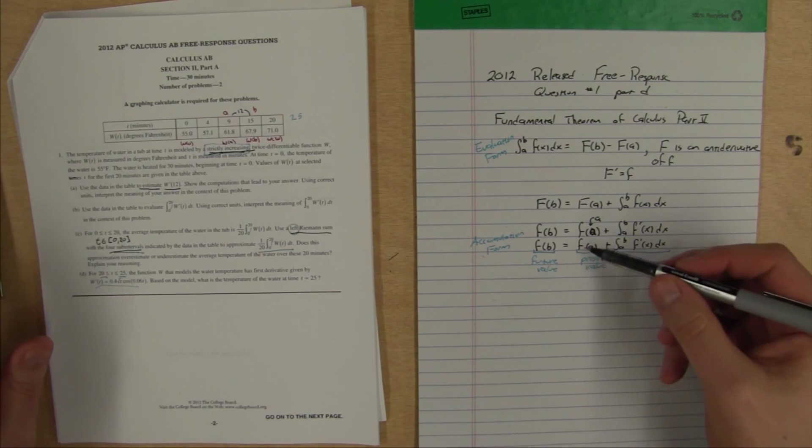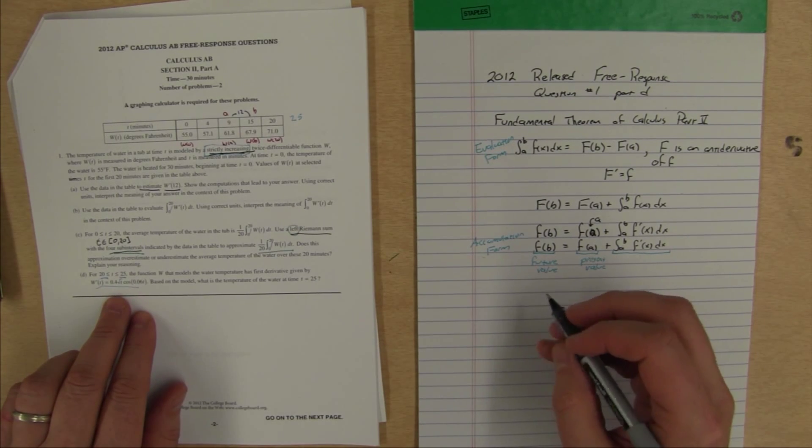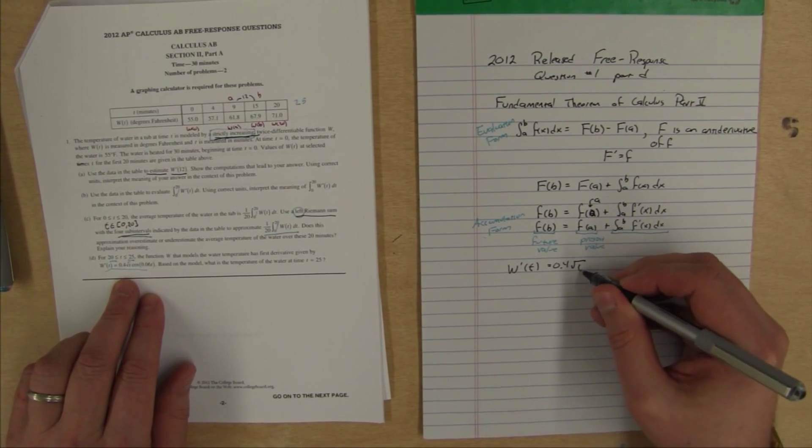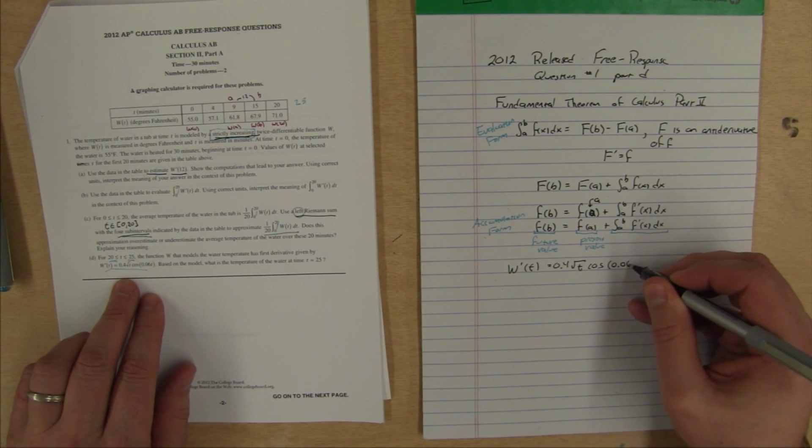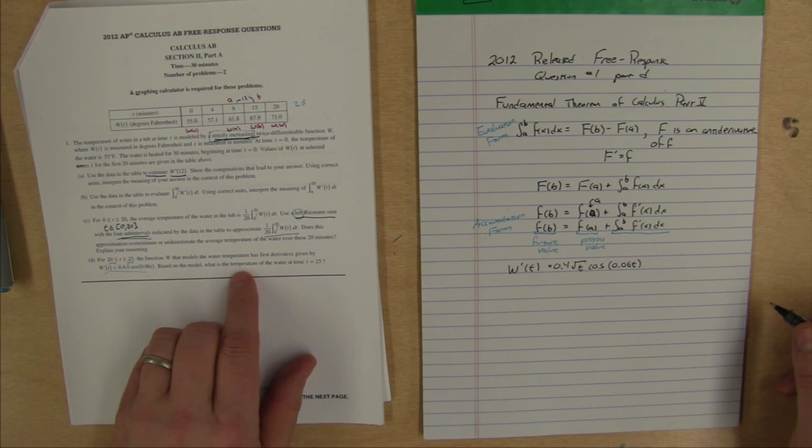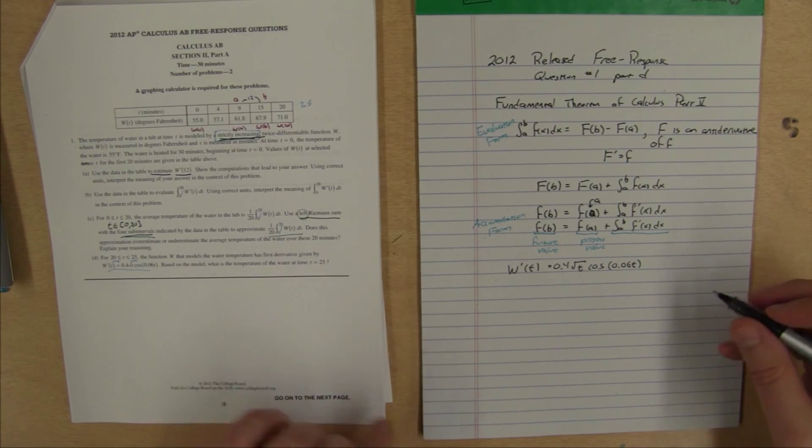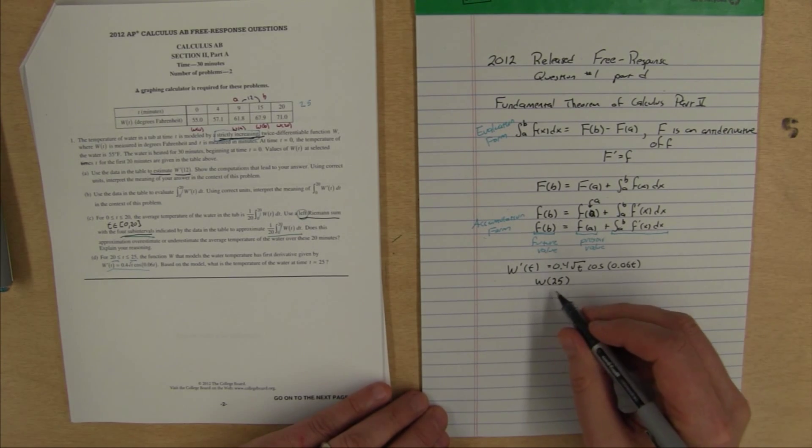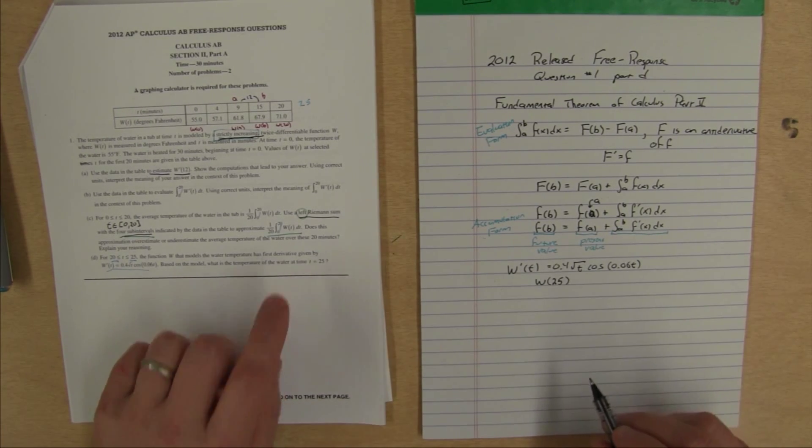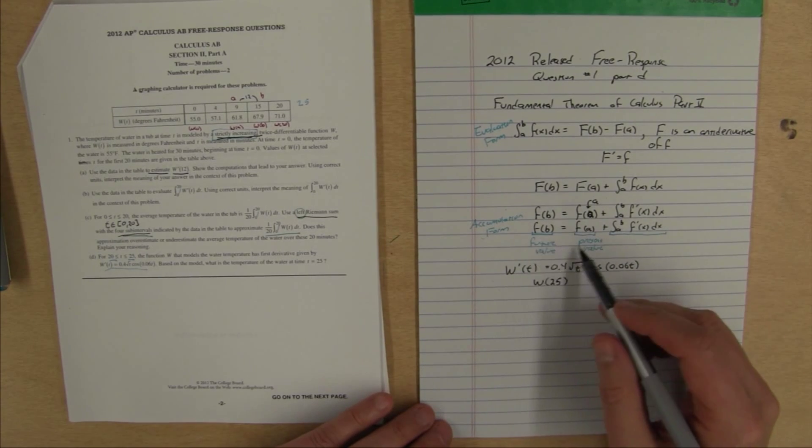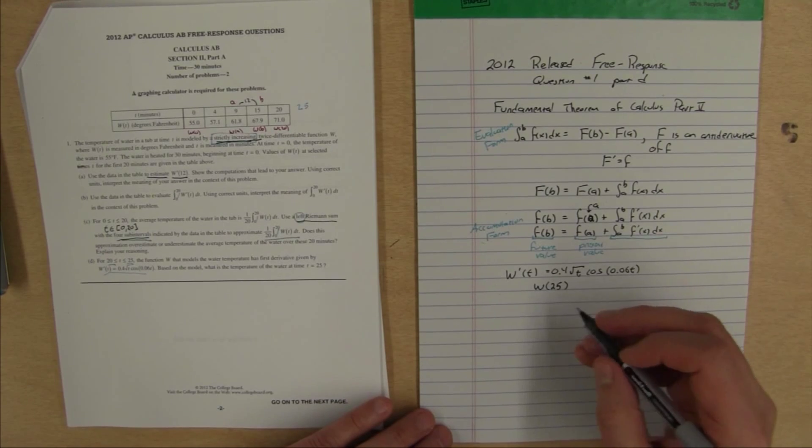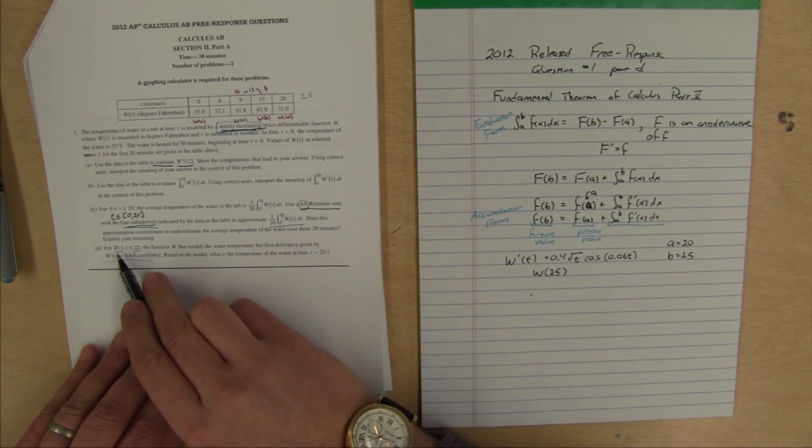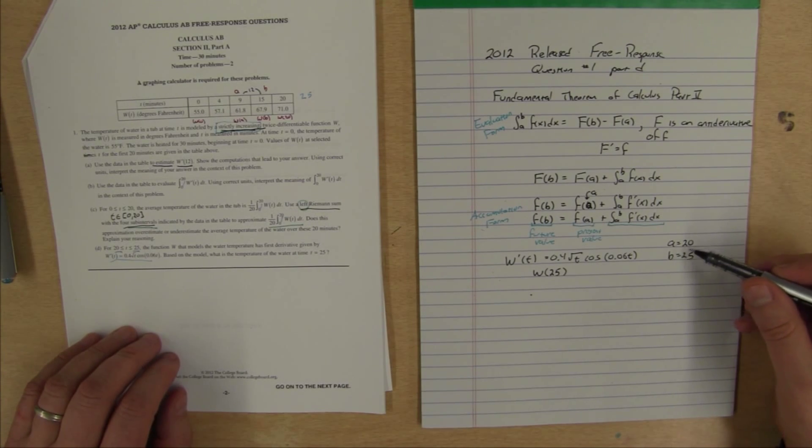In our part D, it tells us that w prime of t is equal to 0.4 square root t cosine of 0.06 t. It asks us what is the temperature of the water at time t equals 25. We are asking what is w of 25. We could use this formula. We're going to use a equals 20 and b equals 25. We can see that right here where the t goes from 20 to 25. That tells us that the a is 20 and the b is 25.